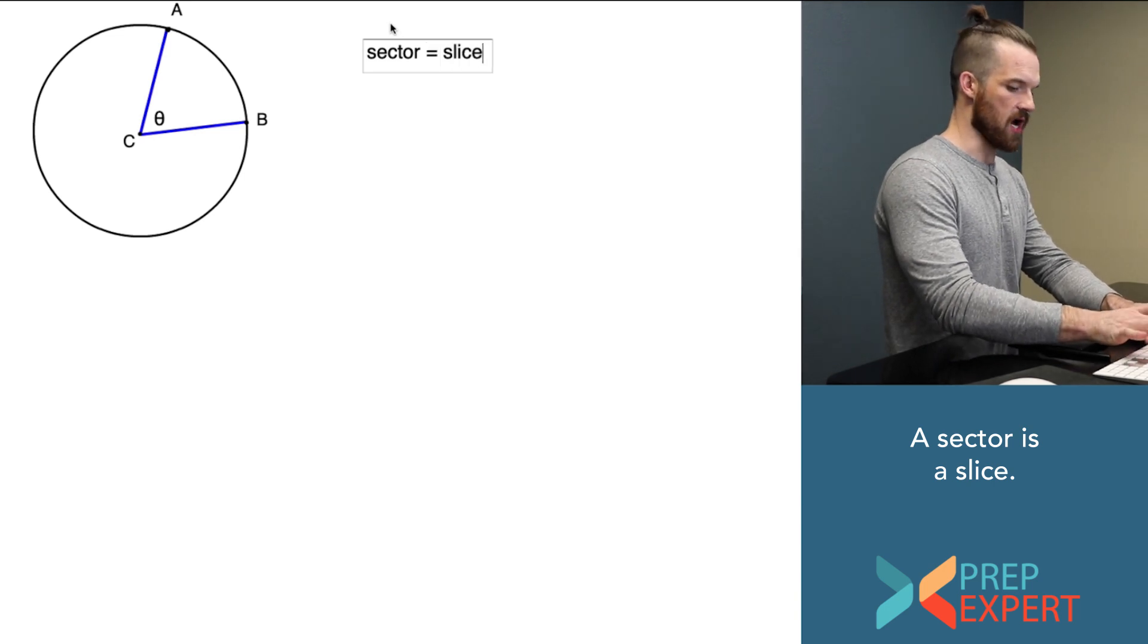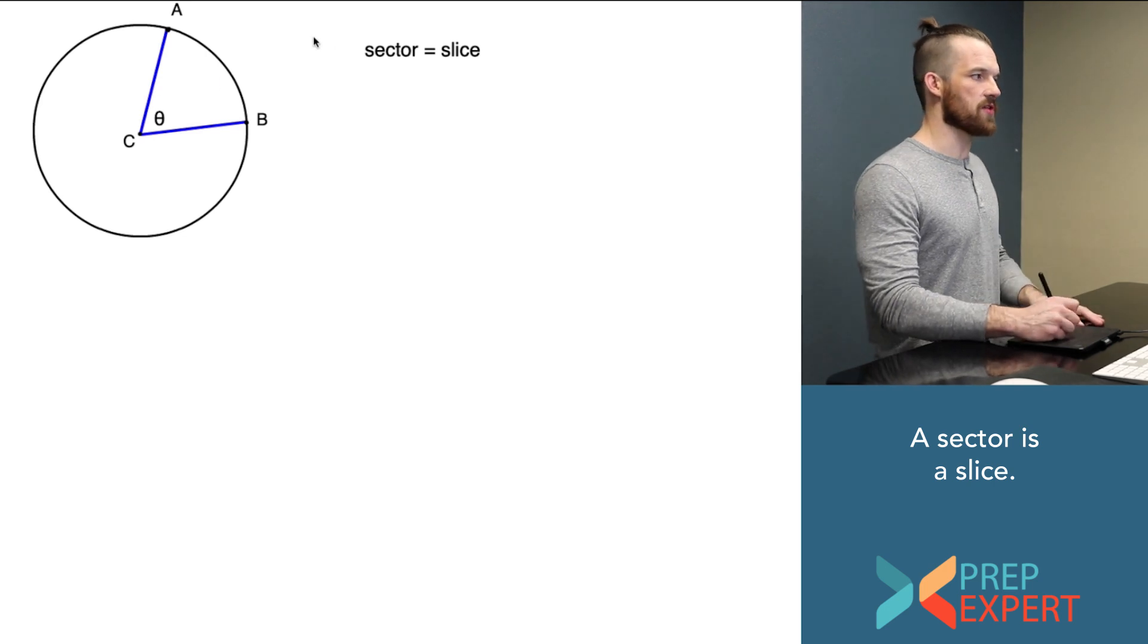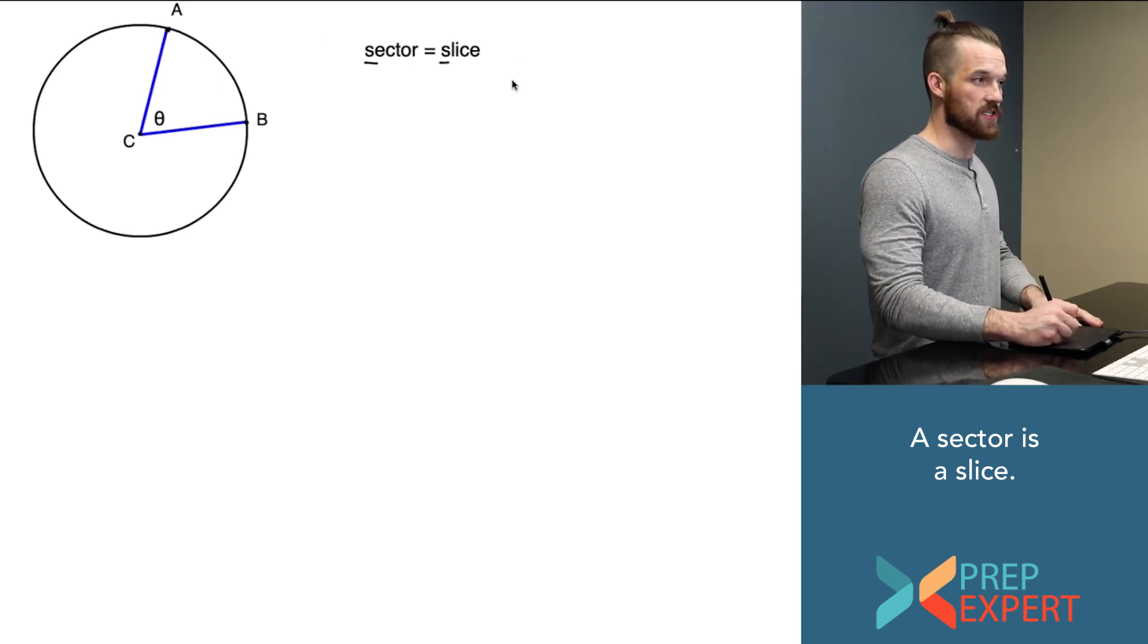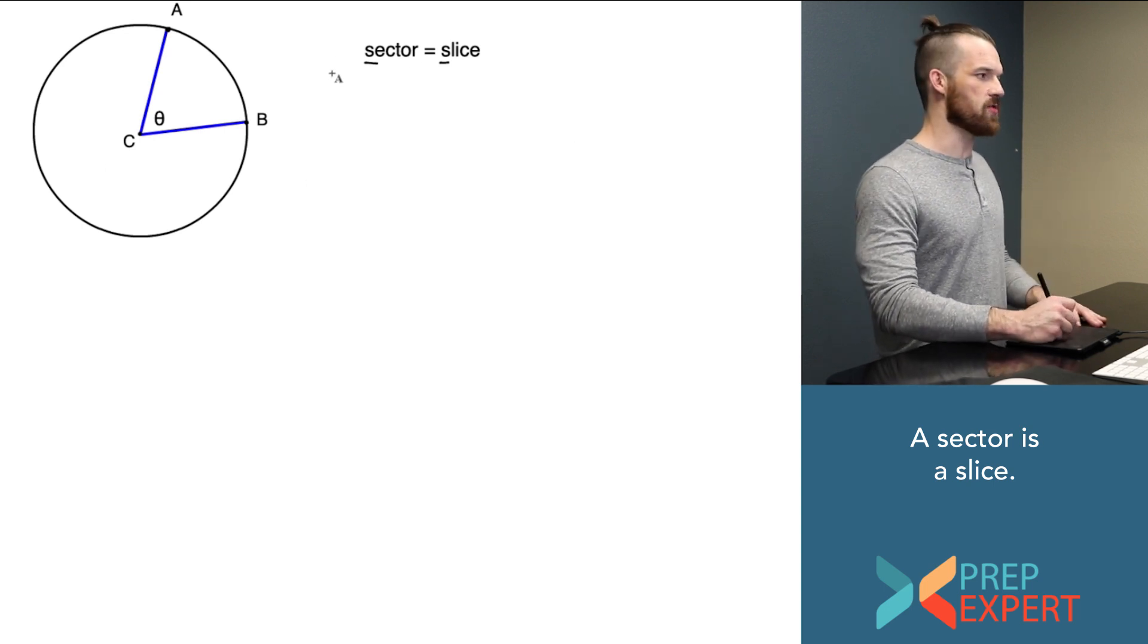The easiest way to remember that is this: if this circle were a pizza, that sector would be a slice. So sector with an S, slice with an S. That's the easy way to remember it.